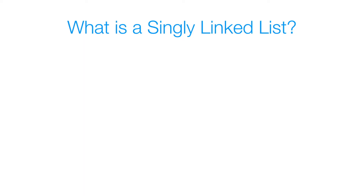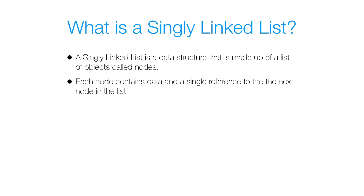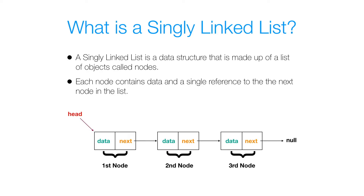So what is a singly linked list? A singly linked list is a data structure made up of a list of objects called nodes. Each of these nodes contains data and a single reference to the next node in the list. Here is a visual representation of what that would look like — in this case we have three nodes, and each node has those two things we spoke about: some data and a reference to the next node in the list.